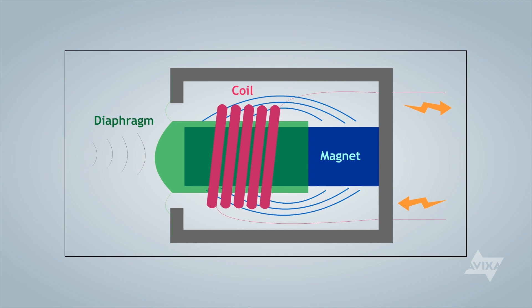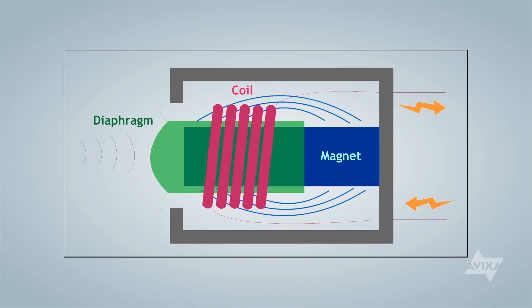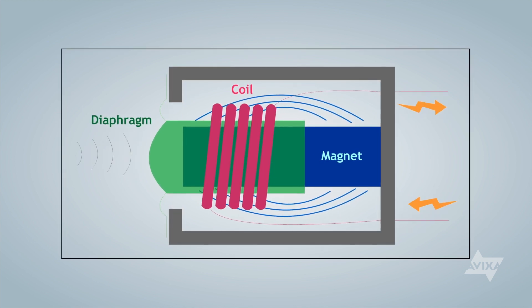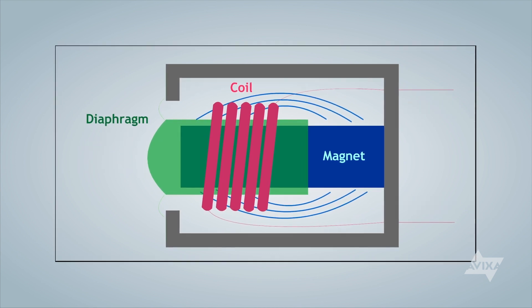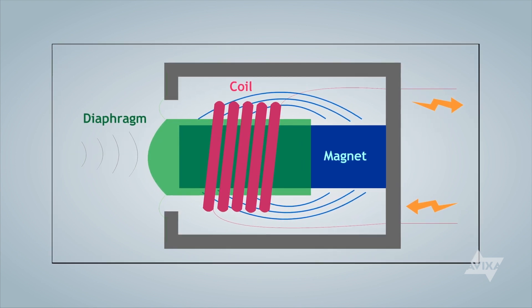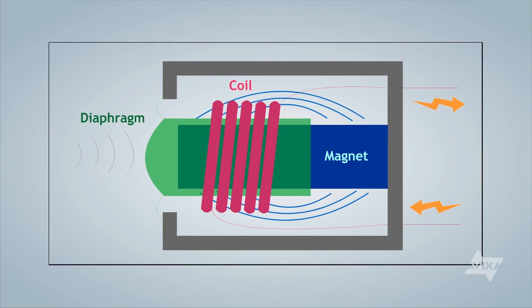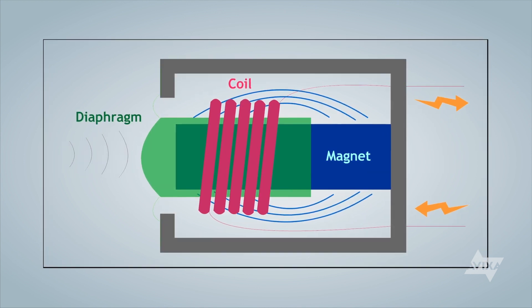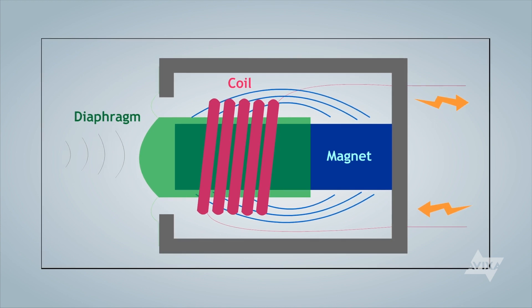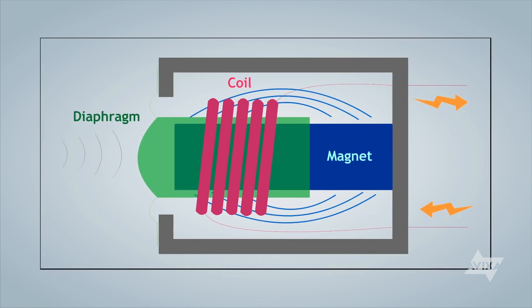In a dynamic microphone, a coil of wire is attached to a diaphragm and placed in a permanent magnetic field. Sound pressure waves cause the diaphragm to move back and forth, thus moving the coil of wire attached to it. As the diaphragm and coil assembly moves, it cuts across the magnetic lines of flux of the magnetic field, inducing a voltage onto the coil of wire. The voltage induced into the coil is proportional to the sound pressure and produces an electrical audio signal.